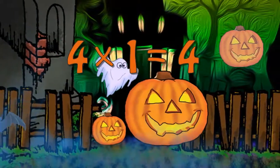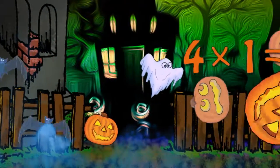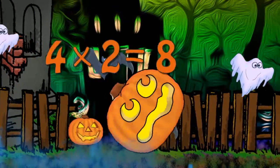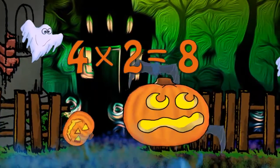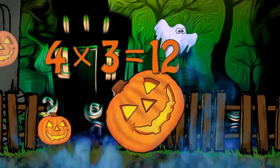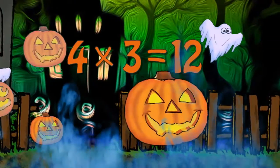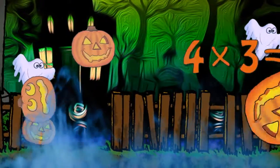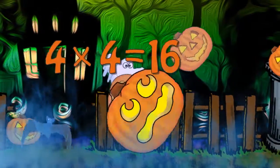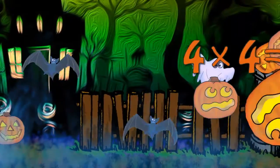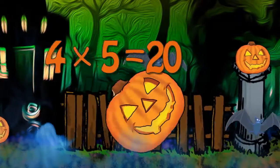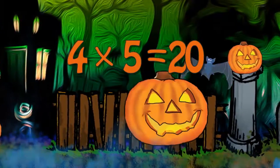Four times one is four. Four times two is eight. Four times three is twelve. Four times four is sixteen. Four times five is twenty.